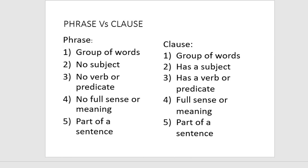I have written these differences on the left and right side. You can see that 'phrase' is written on the top and 'clause' is also written on the top. Number one: group of words. Both are groups of words. We can't say a phrase is one word — that is incorrect. Both will be more than one word.